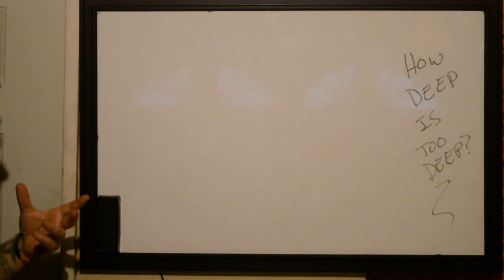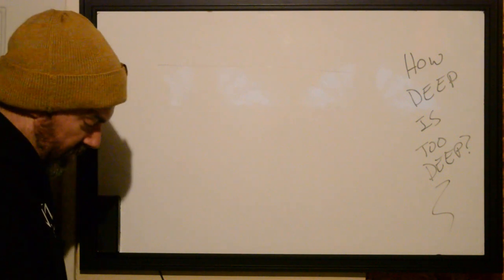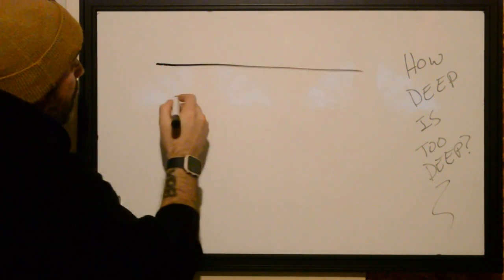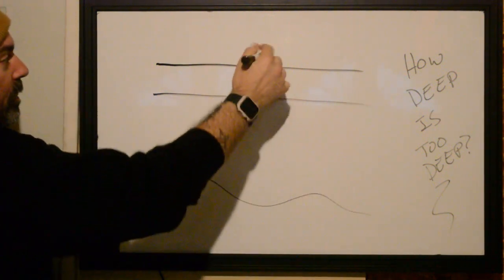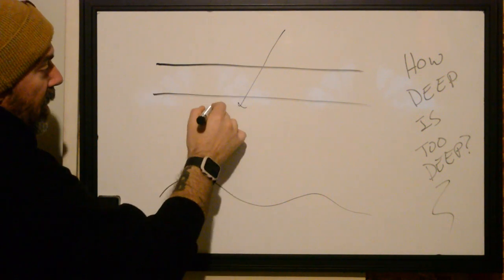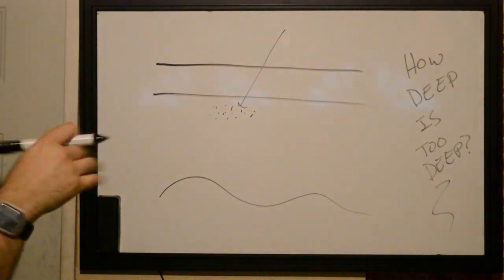How deep is too deep when you're doing a tattoo? So normally, if we go to our skin model, when we're looking at our 2D skin model here, our goal is to bypass the epidermis and deposit that pigment at the top layer of the actual dermis.